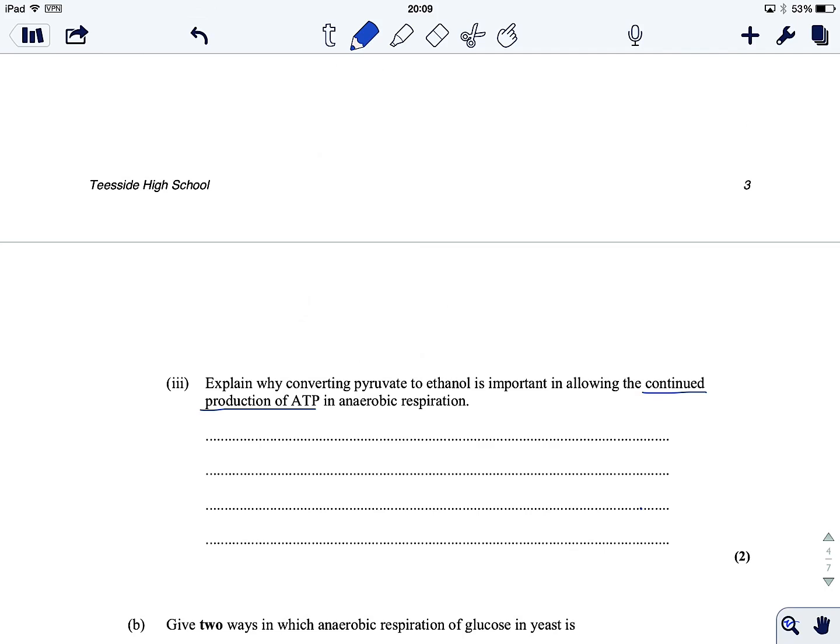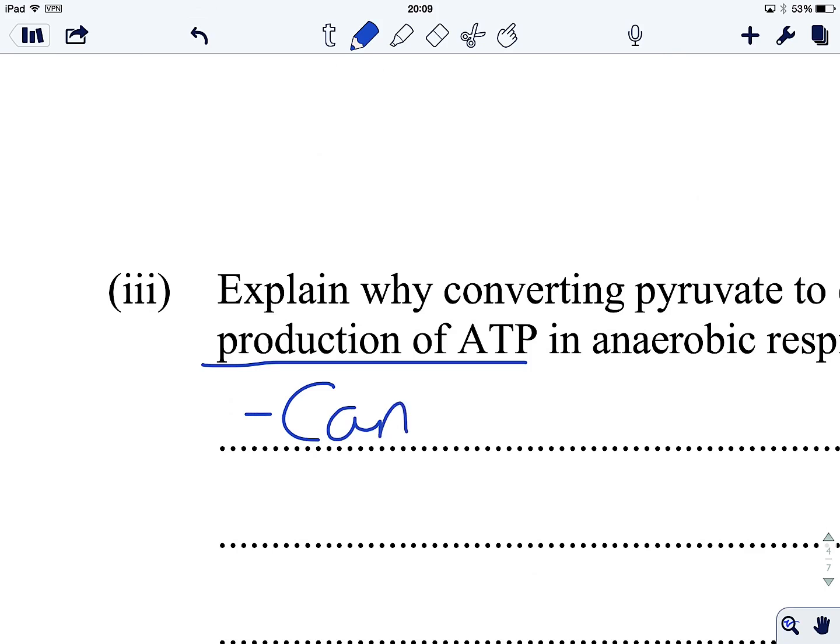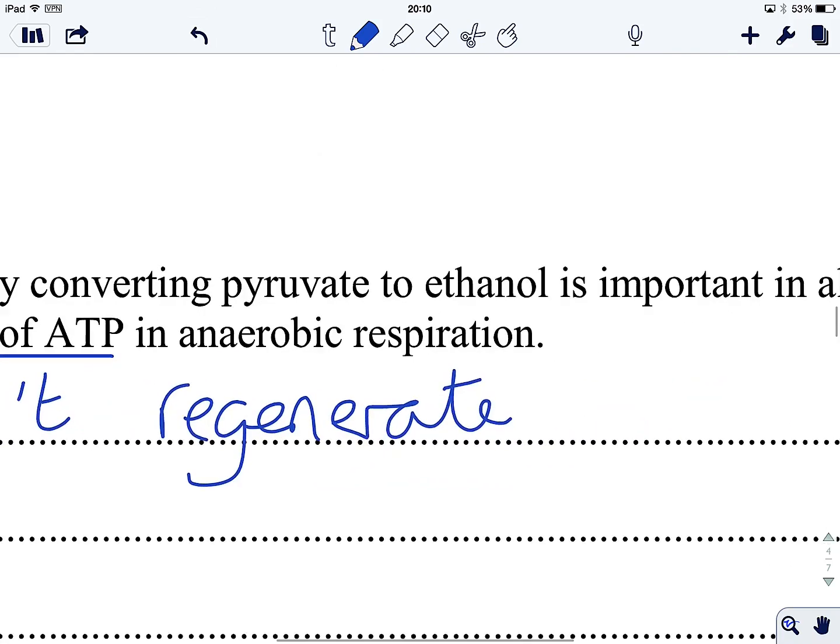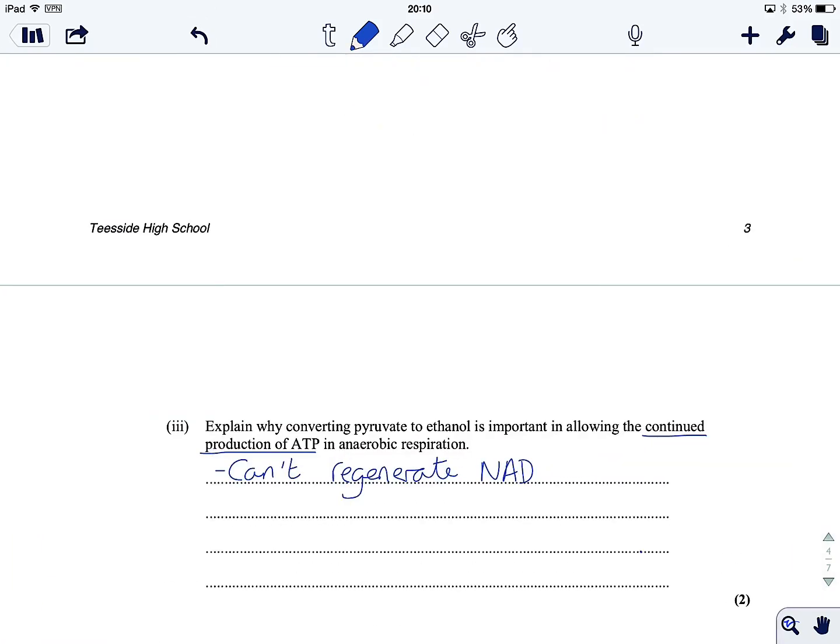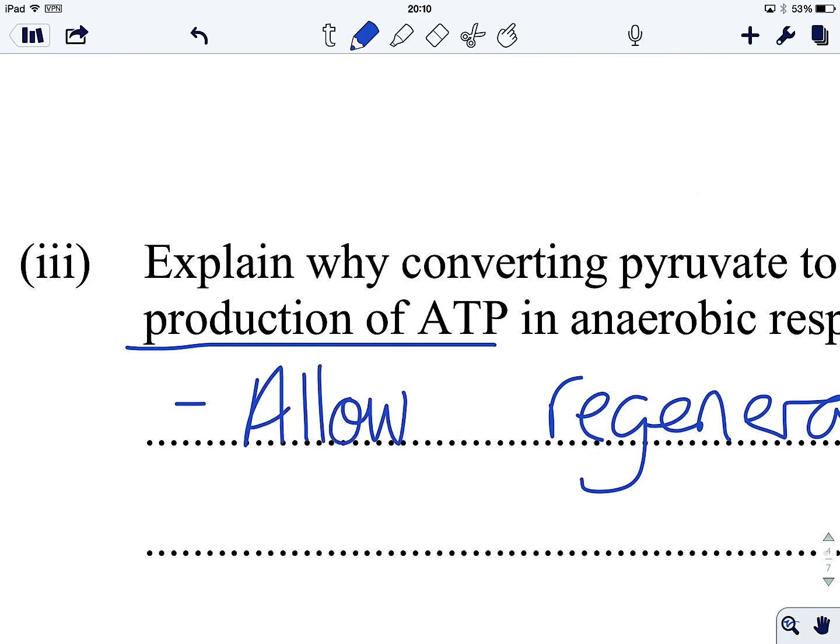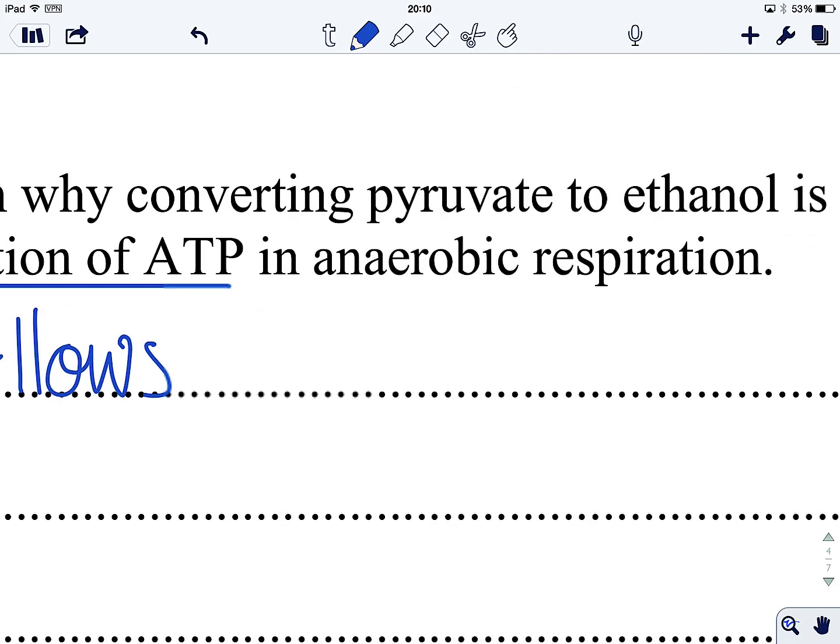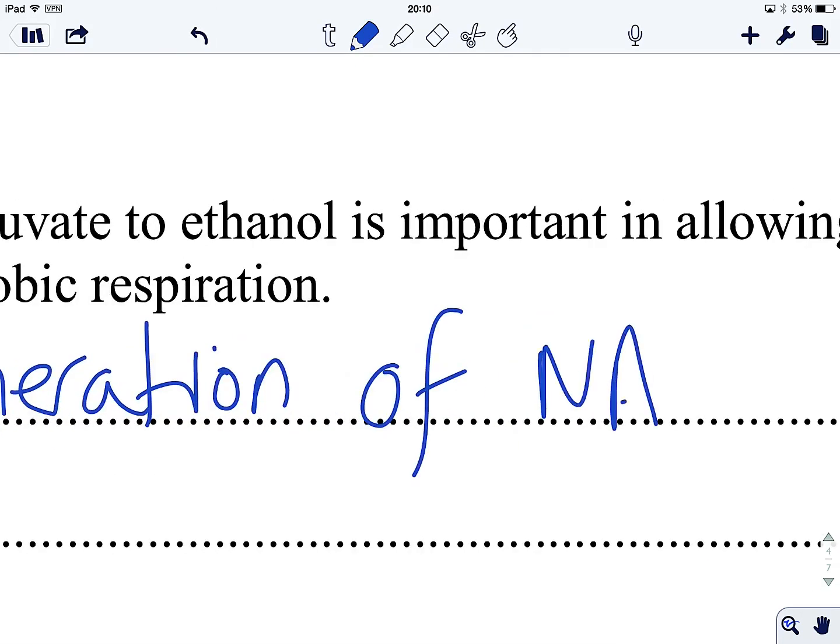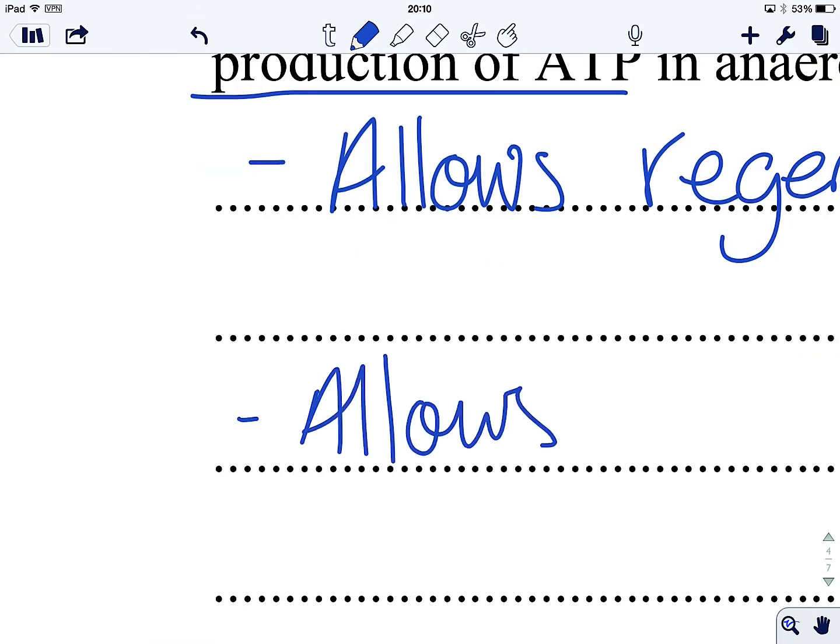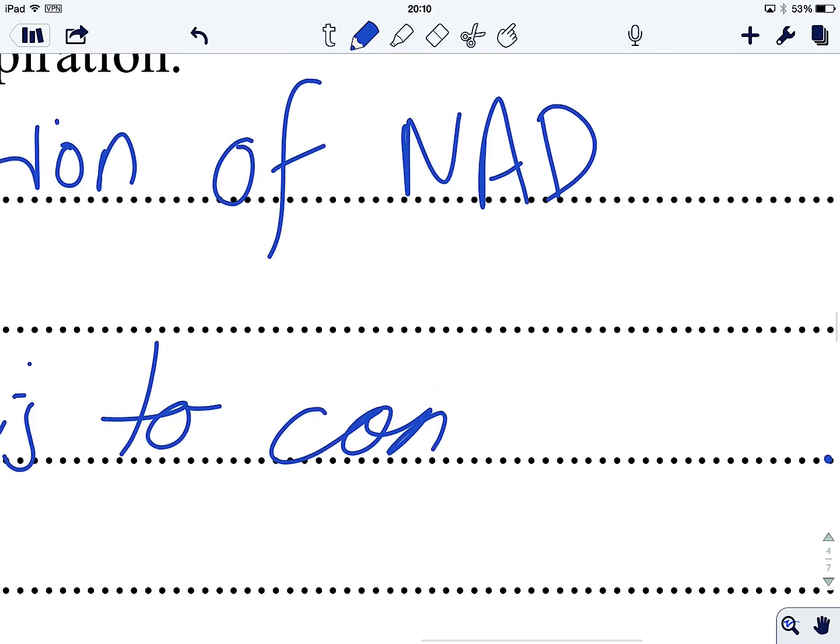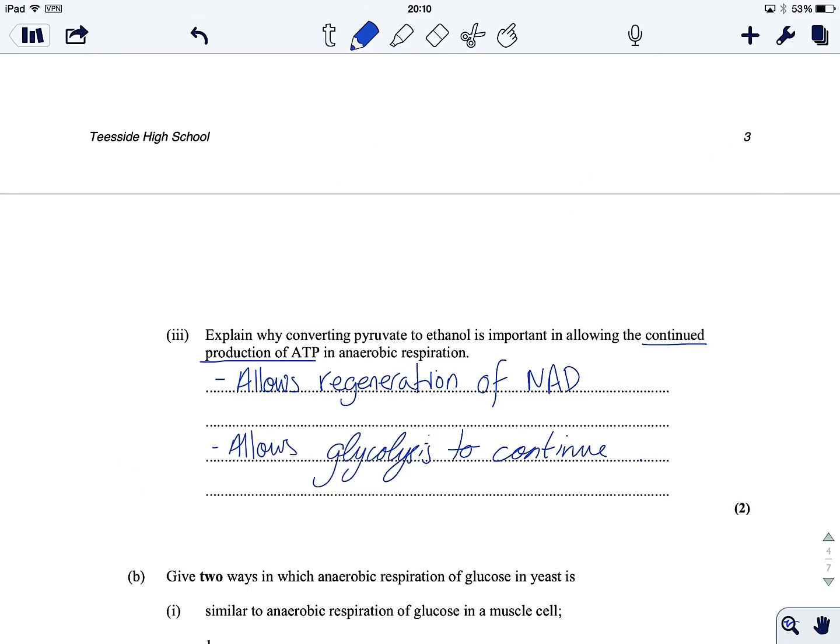It's not a lot of ATP, but in anaerobic respiration, we're thankful for all that we can get. If we don't have this stage here, we don't regenerate the non-reduced form of the coenzyme, because we need that coenzyme to go back to here, to allow glycolysis to continue. This whole question is about allowing glycolysis to keep going. Without the generation of ethanol, we can't regenerate NAD. It allows the regeneration of NAD. But why is that great for producing ATP? Because it allows glycolysis to continue.